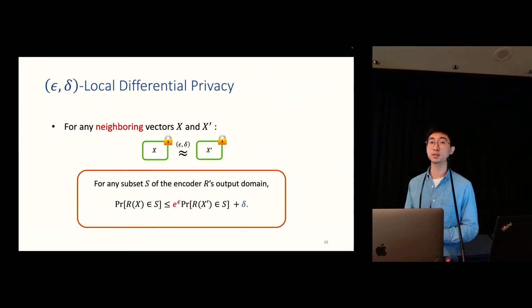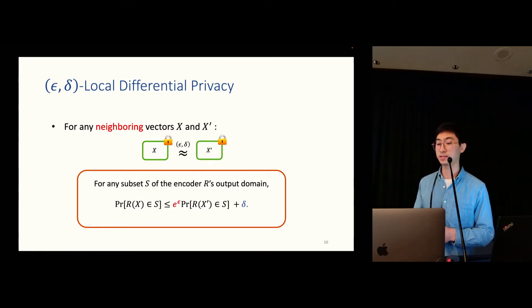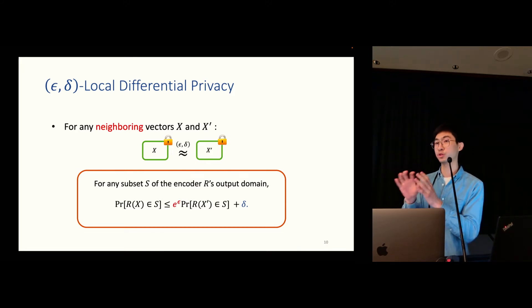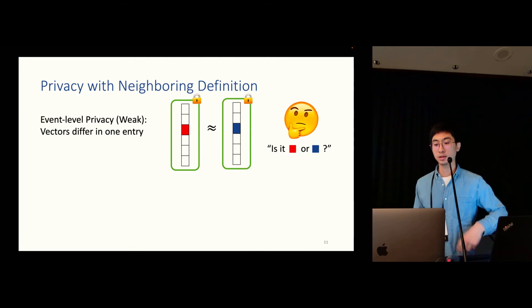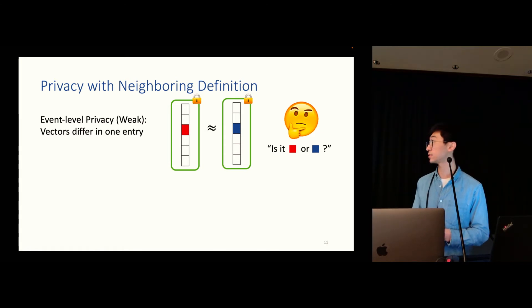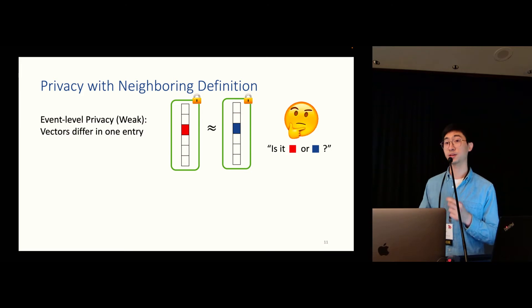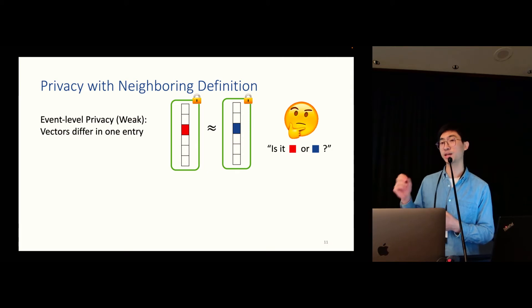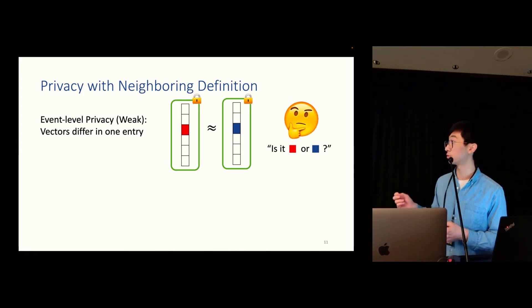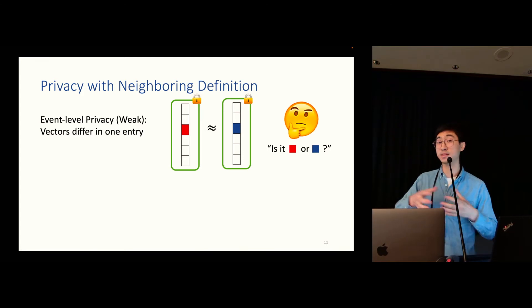To formally define the privacy, we use a pretty standard local differential privacy definition. It says for any neighboring vectors, X and X prime, their privacy-preserving encodings should be very similar. For those who are not familiar with DP, just think about those distributions are very, very close. Actually, with different neighboring definition, we could have different level of privacy. For example, a weaker definition is called the event level privacy. It says for any two vectors such that only differ in one entry, then we require their encodings to be very similar. It is called event level because we can sometimes think about each coordinate in the same vector can be thinking about some individual event. In this case, when the adversary observed the encodings, it cannot distinguish for that particular location whether it is A or whether it is B.